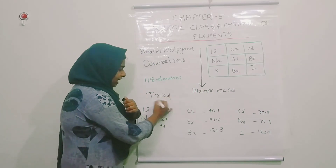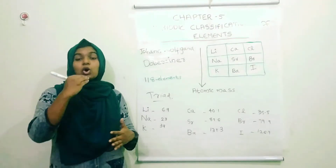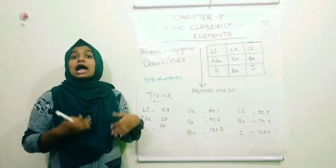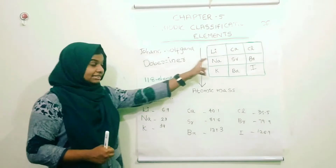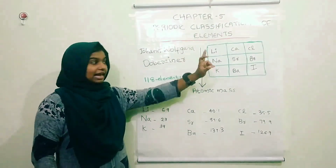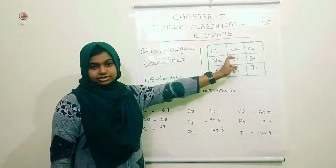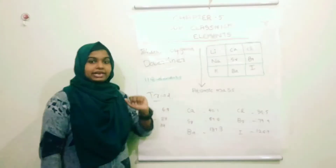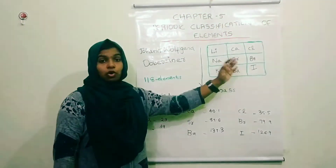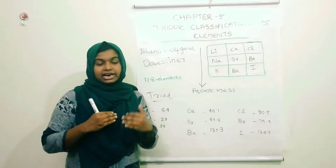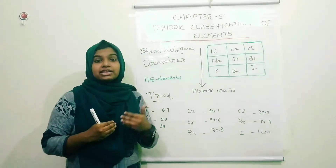Triad — three elements. Those elements are: Lithium, Sodium, Potassium — that is Li, Na, and K. Then calcium, strontium, and barium. As well as chlorine, bromine, and iodine. This can be triads — each group contributes one triad. This is arranged in the form of increasing atomic mass.